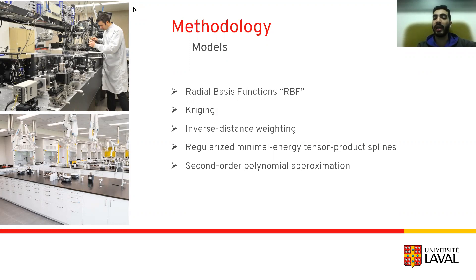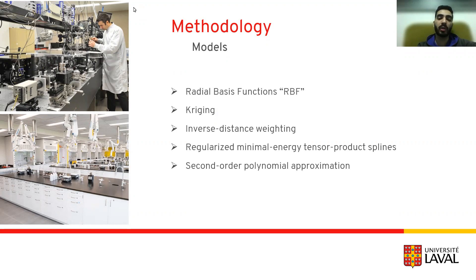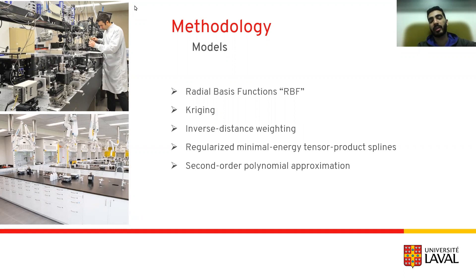On the other hand, tensor product splines enable very fast prediction time that does not increase with the number of training points. Unlike other methods like Kriging and RBF, RMTS is not susceptible to numerical issues when there is a large number of training points or when there are points that are too close together. The last model is second-order polynomial approximation.